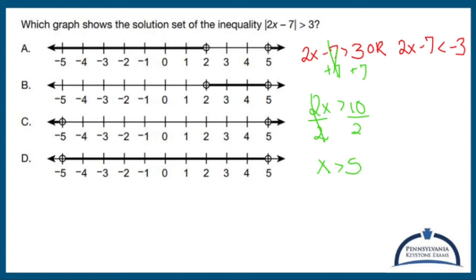The other inequality, we solve it using basically the same exact techniques. Add 7, cross you out. You get 2x is less than 4, divide both sides by 2, no flipping of the signs, x is less than 2.